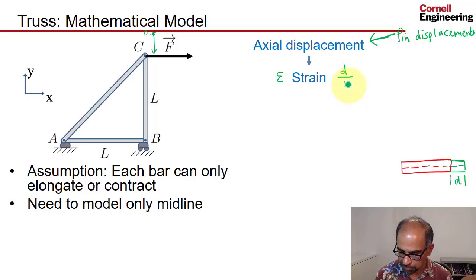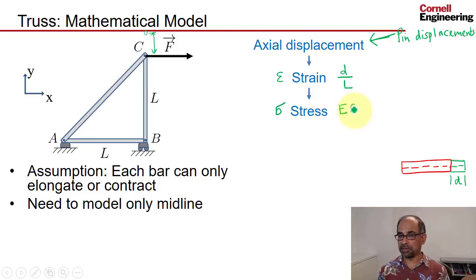Let me say that's L. And from that I can calculate the stress sigma, which is just going to be the Young's modulus times epsilon because everything is uniform.